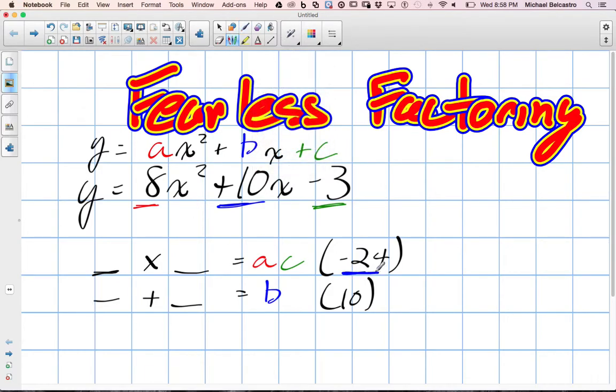Probably the easiest way to go about this is thinking of factors of 24. So we have 1 and 24. Do 1 and 24 add up to 10? No, those don't work. Another set of factors are 2 and 12. Do 2 and 12 add up to 10?